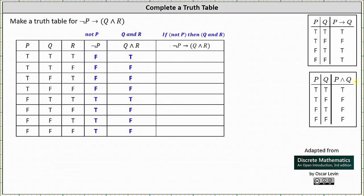For the final column we have the given implication: if not p then q and r. An implication is false only when the hypothesis is true and the conclusion is false — which means in this case when not p is true and q and r is false. Looking at columns four and five, not p is true and q and r is false in rows six, seven, and eight. In these three rows the given implication is false; in all other rows the implication is true. The last column of the truth table is: true, true, true, true, true, false, false, false.